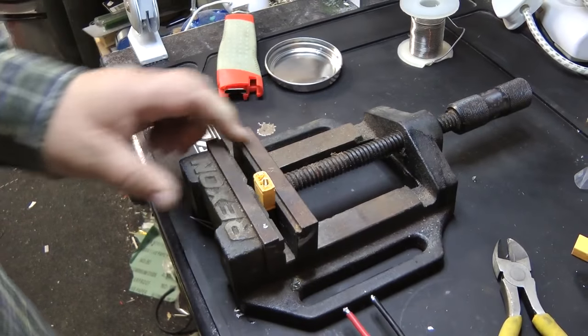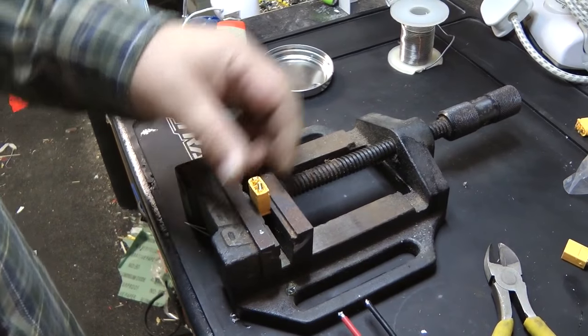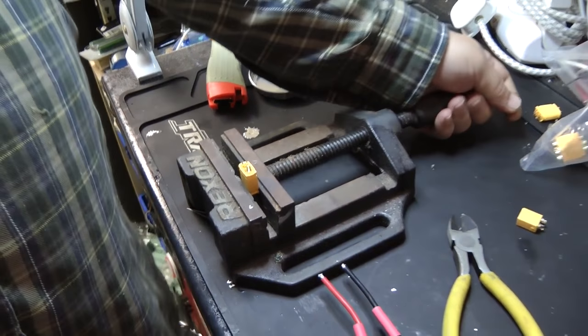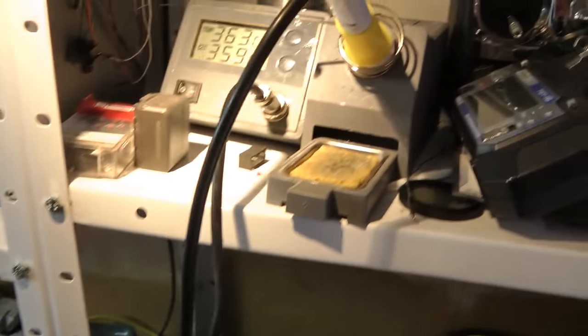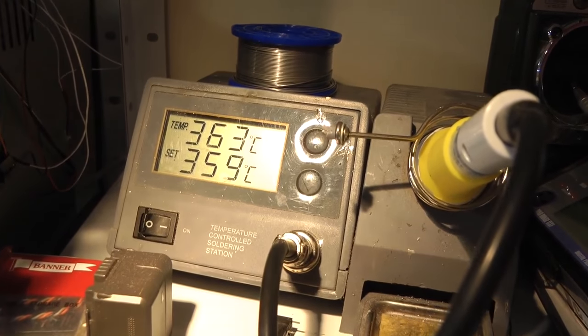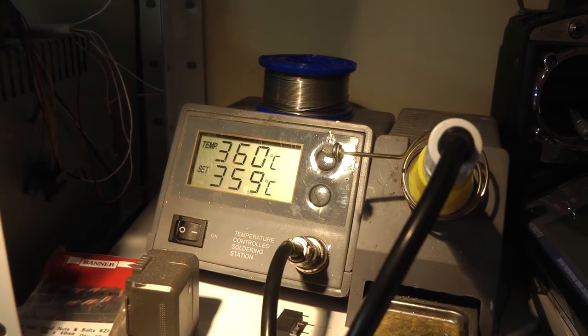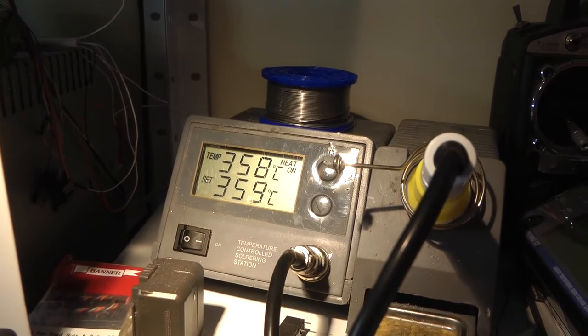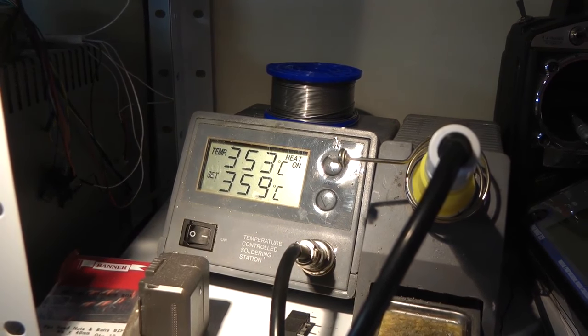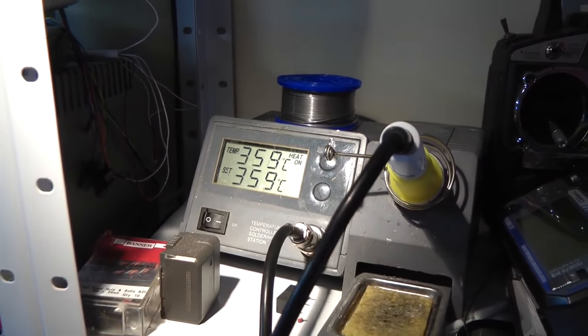So we're going to put it on there ready for soldering. Now we've got our iron set to 360, well it's running at, was it 360, there you go, it's dropping down slightly, but it's set to be as close to 360 as possible.